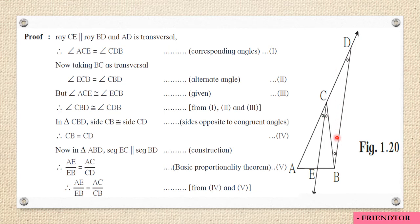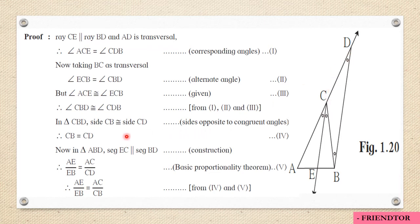In triangle CBD, we now have two congruent angles: angle CBD equals angle CDB. By the converse of the isosceles triangle theorem, if two angles of a triangle are congruent, the sides opposite to them are congruent. Therefore, side CB is congruent to side CD.